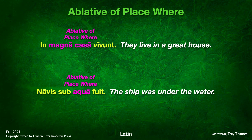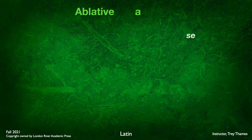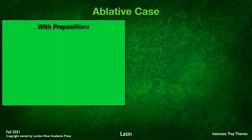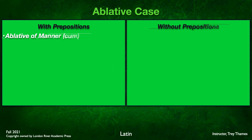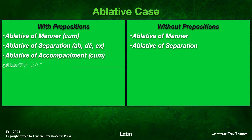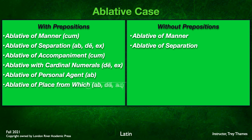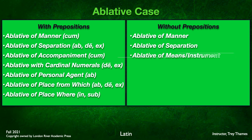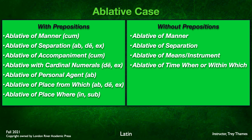Just a couple of quick notes: there are two categories of ablatives — those that have prepositions and those that do not. The ablative of manner (usually with cum) and the ablative of separation (with ab, dē, or ex) can go either way. Ablative of accompaniment, cardinal numbers, personal agent, ablative of place from which, and ablative of place where all require prepositions. The ablative of means and the ablative of time when or within which will never have prepositions. We'll talk more in class about why that is, and make sure you do the reading for the chapter.